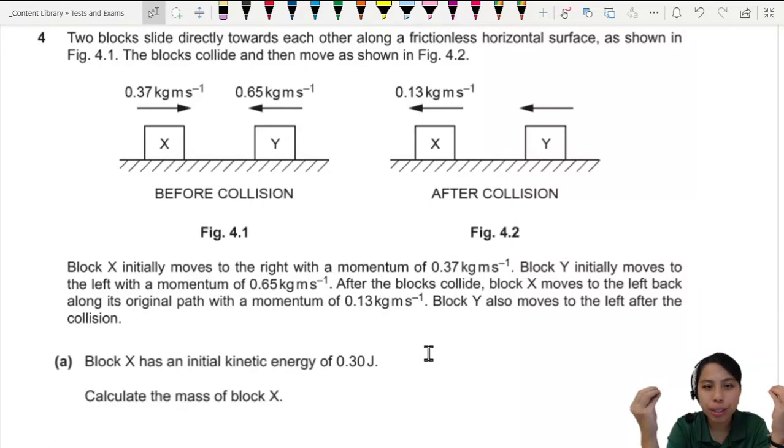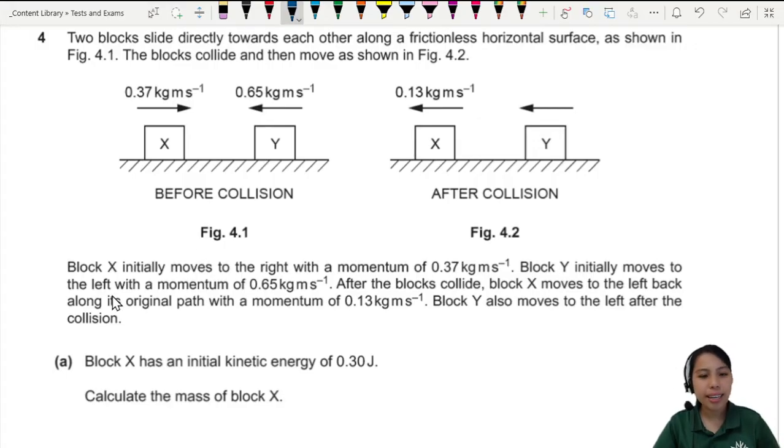Two blocks slide towards each other along a frictionless table and they collide, boom, move apart. Then you have all this information and they ask us to find the mass of block X.